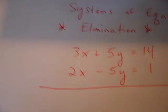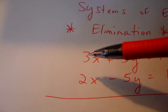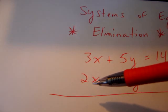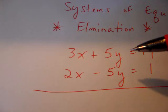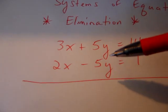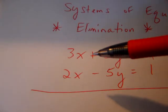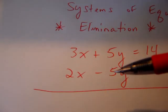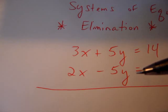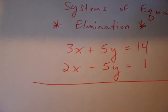Upon inspection, we can see here that our x variables have a coefficient of 3 and 2, respectively. That's not going to help us right now. Now, over here, our y variables have coefficients of 5 in both equations. This is a plus 5, this is a minus 5. You can see that those are opposite numbers.